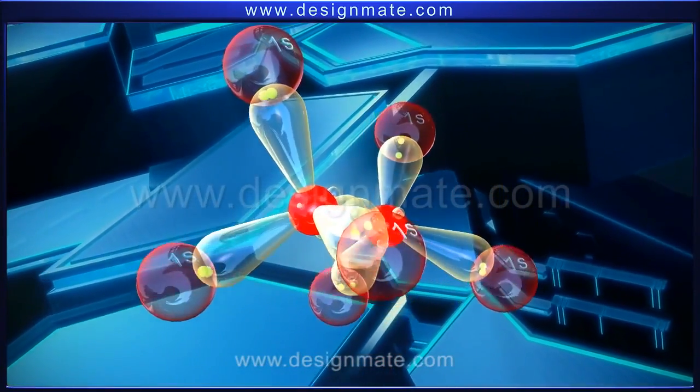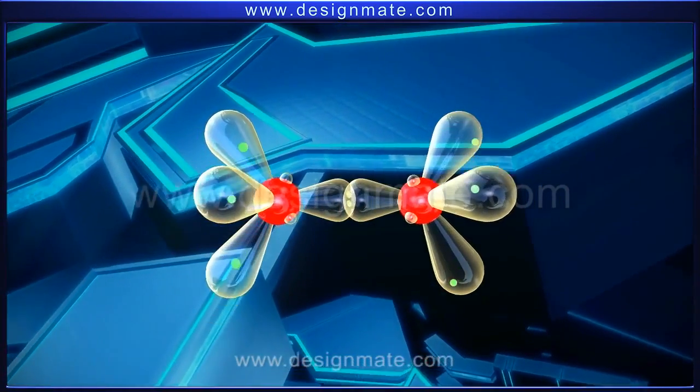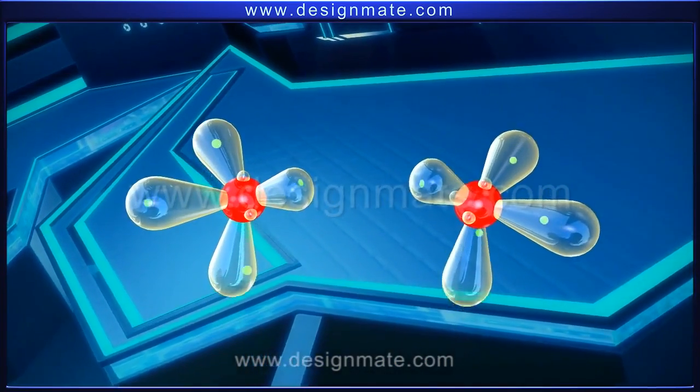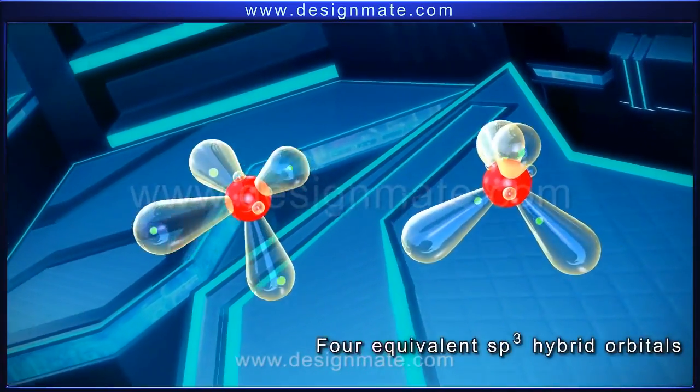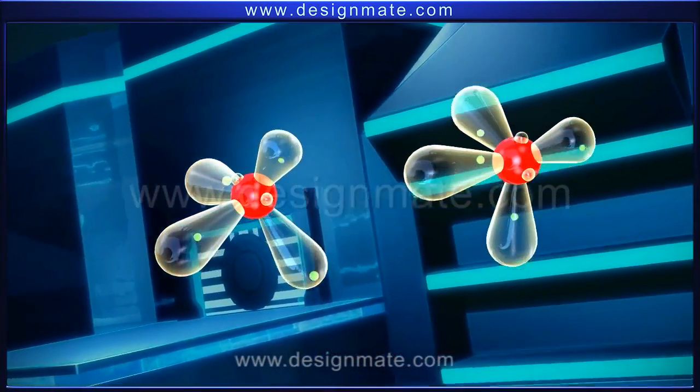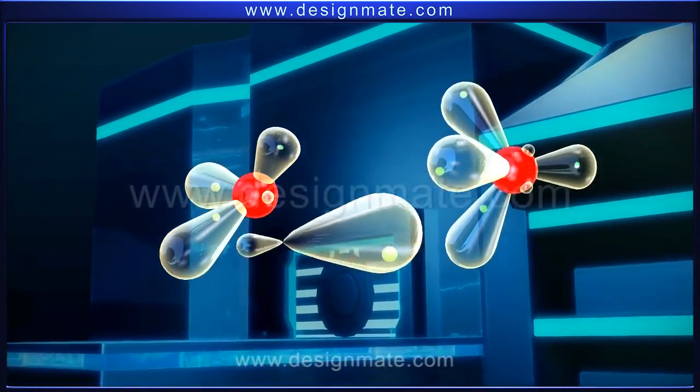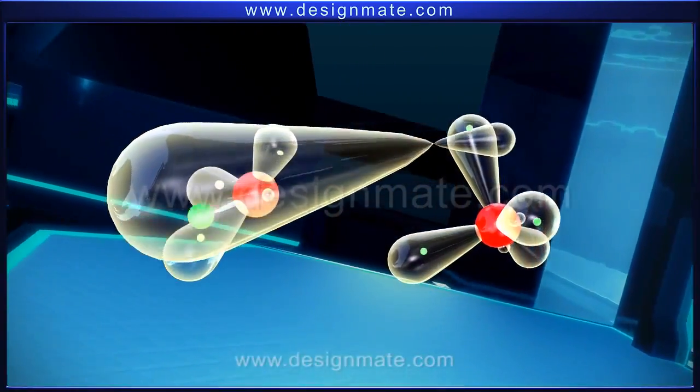Let us now remove the six hydrogen atoms from this structure. Also, drag the two carbon atoms apart. We can clearly see four equivalent sp3 hybrid orbitals around each carbon atom. Each of these orbitals has one lobe bigger than the other and is occupied by a single unpaired electron.